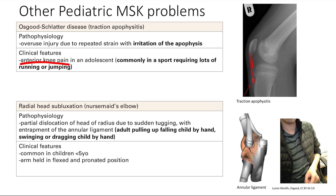Finally, last but not least: radial head subluxation, also known as nursemaid's elbow. This is a problem where you have a partial dislocation of the head of the radius due to a sudden tugging.